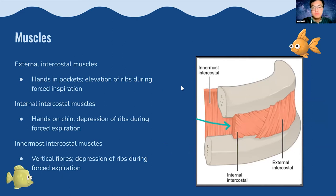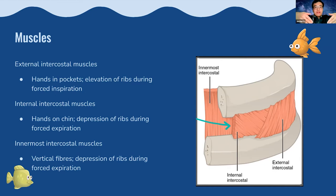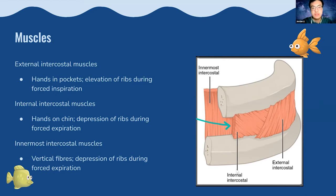There are three layers of intercostal muscles running between ribs. External intercostal muscles run diagonally in a 'hands in pockets' direction and elevate the ribs during inspiration. Internal intercostal muscles run in the opposite diagonal — 'hand on chin' direction — and depress the ribs during forced expiration. Innermost intercostal muscles run more vertically and also help in depression of the ribs during forced expiration.